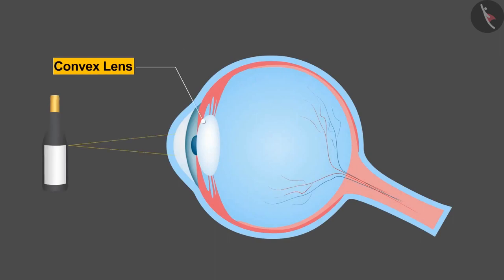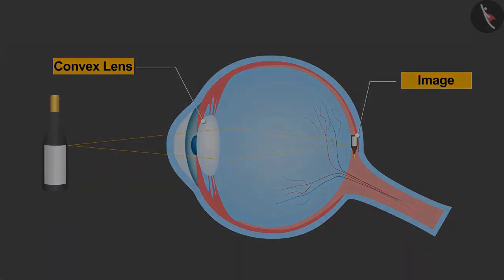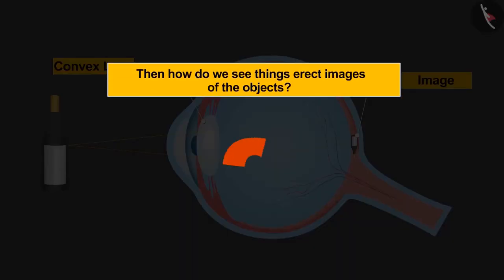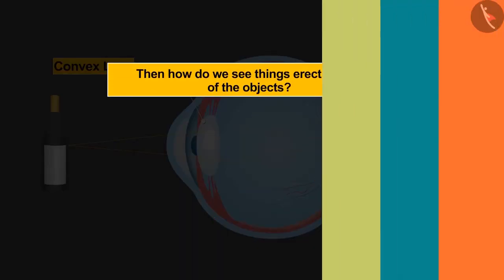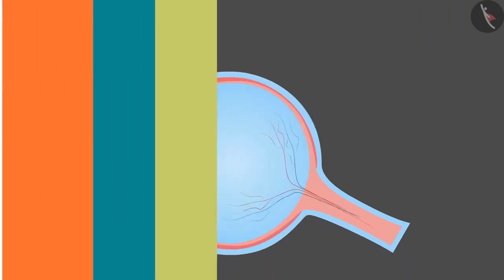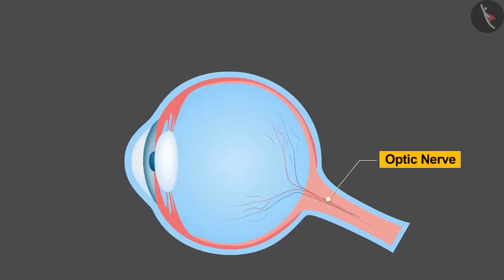Being a convex lens, always a real and inverted image is formed on the retina. Then how do we see erect images of the objects? From here the work of the brain begins, which is connected to the eye through the optic nerve.